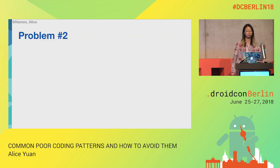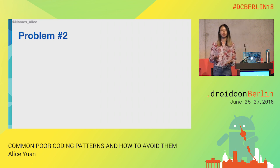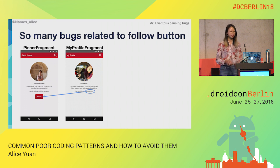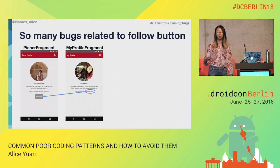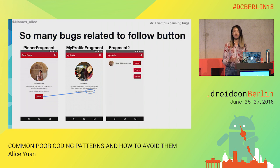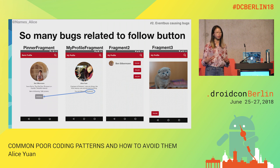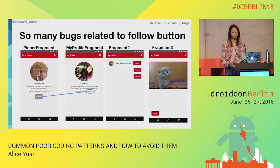Problem number two. We're going to move a little bit further away from view hierarchy and talk about events. This problem is that I have a lot of bugs related to my follow button. Let's look at the views one more time. When I click on the follow button, I just want my profile to change so that it says I'm following 26 pinners instead of 25. As we add more and more fragments, this becomes more difficult. People are reporting bugs that the update to the profile fragment is not counting correctly.